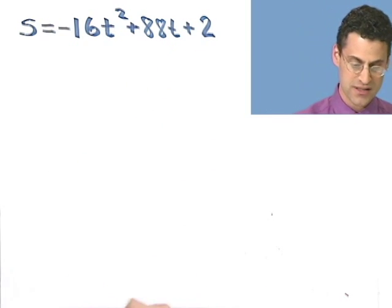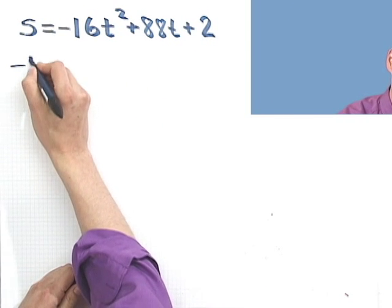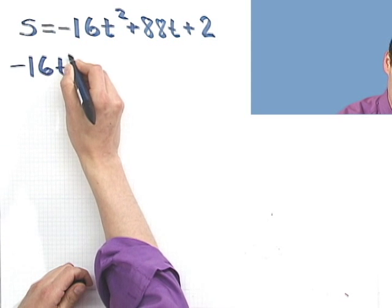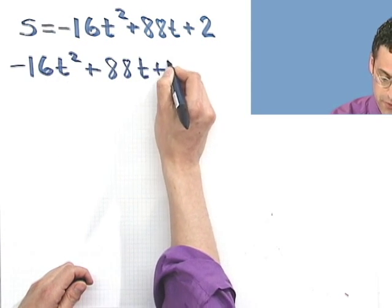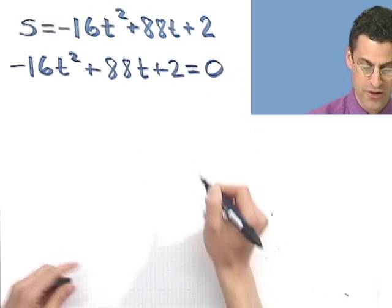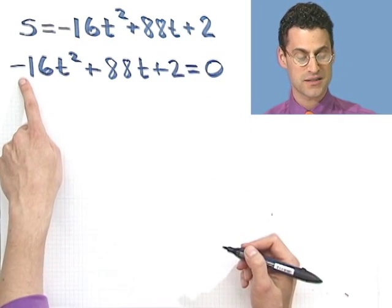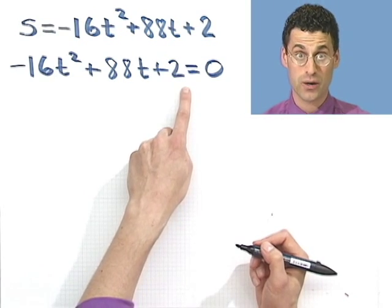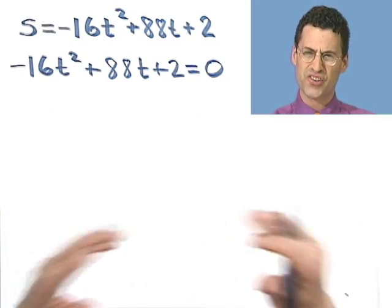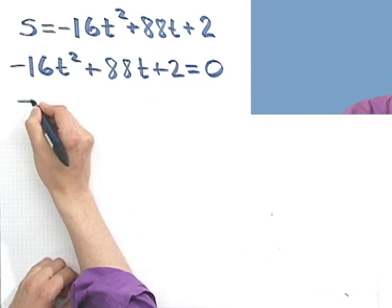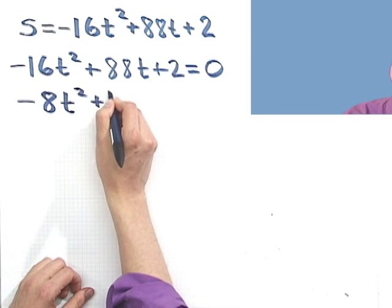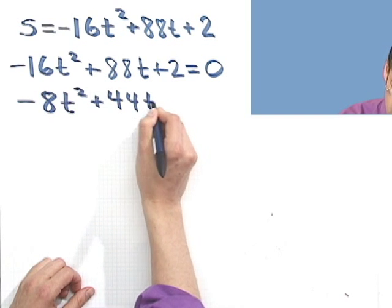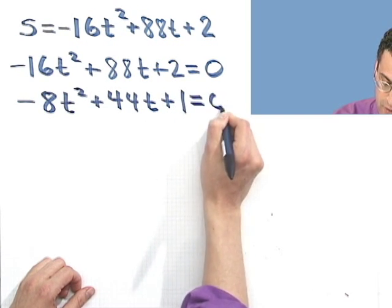So what I do is I set this equal to 0 and solve. So I have minus 16t squared plus 88t plus 2 equals 0. And you notice one thing I can do immediately, happily, is factor out a common factor of 2 everywhere and then divide it out, which sort of reduces the numbers, and of course that makes me so happy because I can't deal with big numbers. So I'd have a minus 8t squared plus 44t plus 1 equals 0.